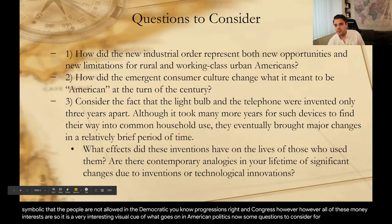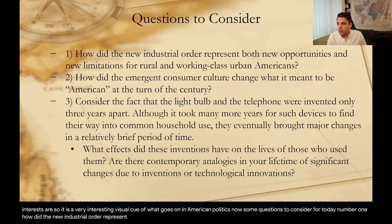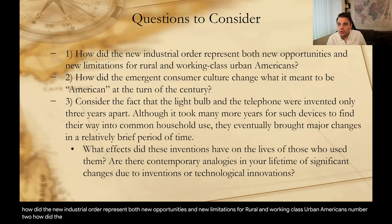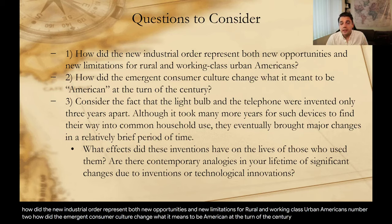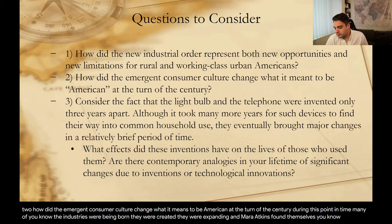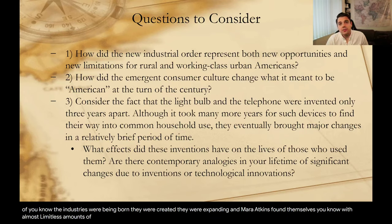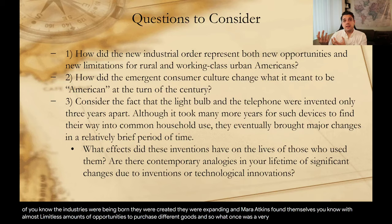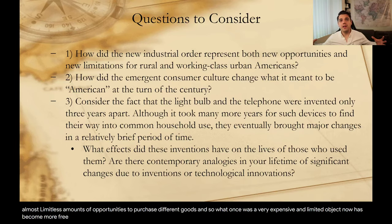Some questions to consider for today. Number one: how did the new industrial order represent both new opportunities and new limitations for rural and working class urban Americans? Number two: how did the emergent consumer culture change what it meant to be American at the turn of the century? During this time, many industries were being born, created, and expanding. Americans found themselves with almost limitless opportunities to purchase different goods, and what once was expensive and limited has now become more freely available.